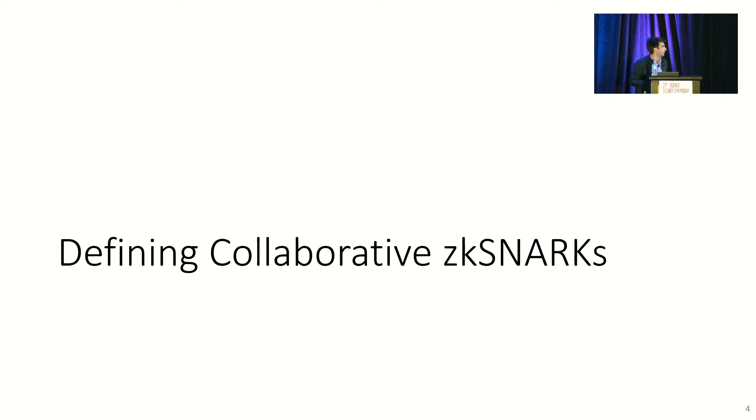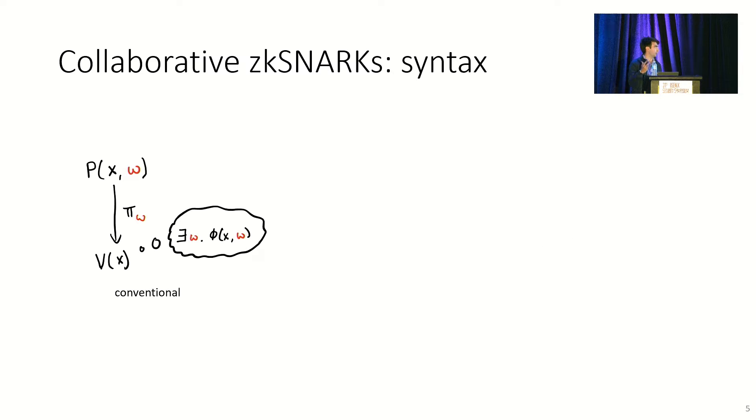Definitions first, what is a collaborative ZK-SNARK? Well, it's easiest to understand through comparison. In a conventional ZK-SNARK, as we heard before, there's a prover who has public data, denoted X, secret data, denoted W, and the prover produces some proof that shows that a predicate phi holds for this information. In the collaborative setting, we just replace the single prover with multiple provers. In this diagram, three.